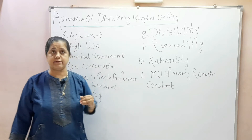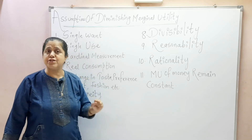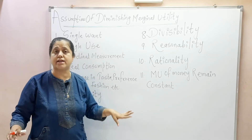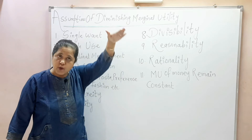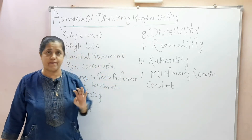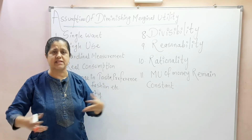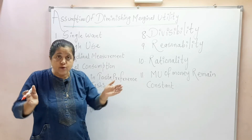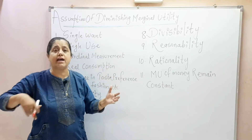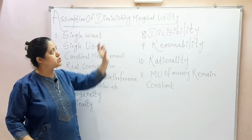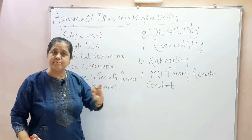Ham bar bar statement mein bol rahe hain 'other things being equal, other things being constant.' Kuch conditions ko agar ham same rakhe, unchanged rakhe, toh ye law jo Marshall ka kahta hai ki marginal utility with every increase in the stock of commodity will go on diminishing — yeh prove hoga. Hamarah jo human behavior hai, jo always fluctuate hota hai place ke saath, person ke saath, time ke saath, commodities ke saath — unho ne usse restrict kiya hai. This law of diminishing marginal utility is based on some conditions, jisko ham ne kaha assumptions of law.